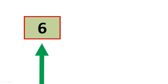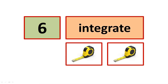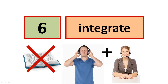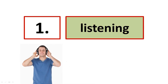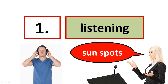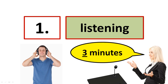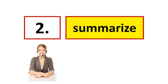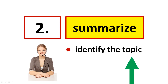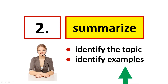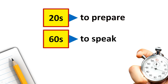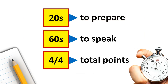Next is speaking task 6. This task measures your ability to integrate two skills: listening and speaking. There is no reading. Step 1 is listening — you will listen to a professor giving an academic lecture; the topic might be on sunspots, and the lecture will last about three minutes. Step 2 is speaking — you will summarize the lecture, identifying the topic and the examples. You will not give your opinion. You will have 20 seconds to prepare and 60 seconds to speak. This task is worth four total points.